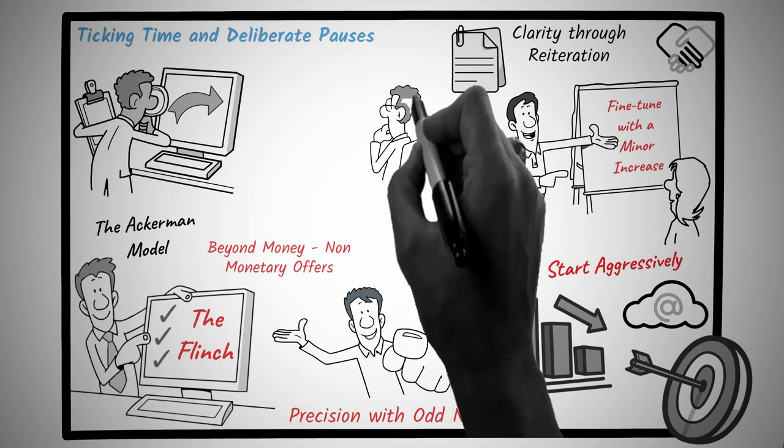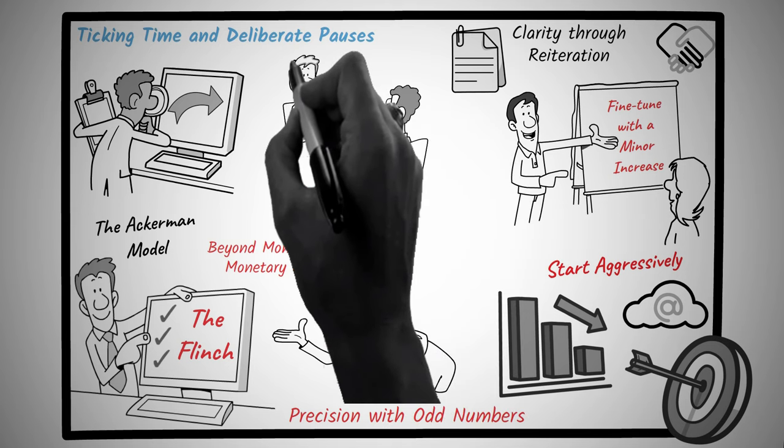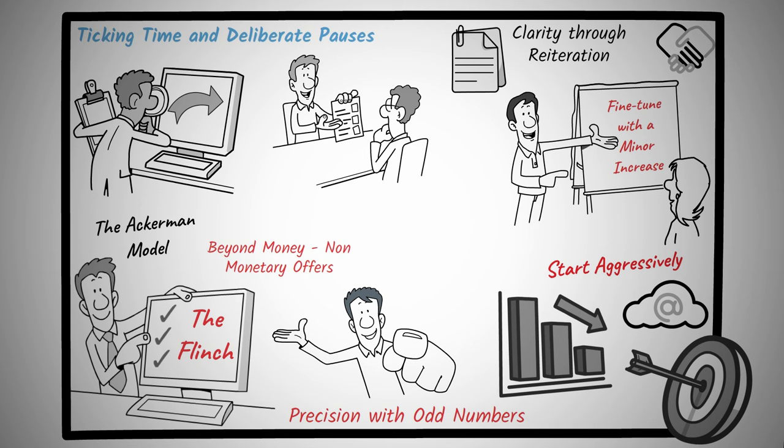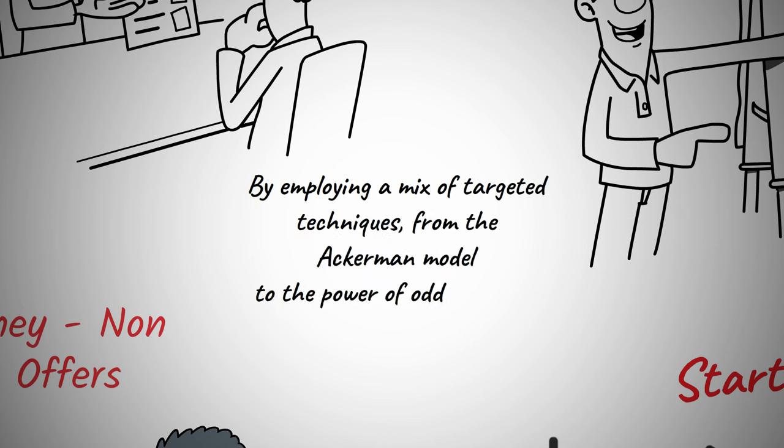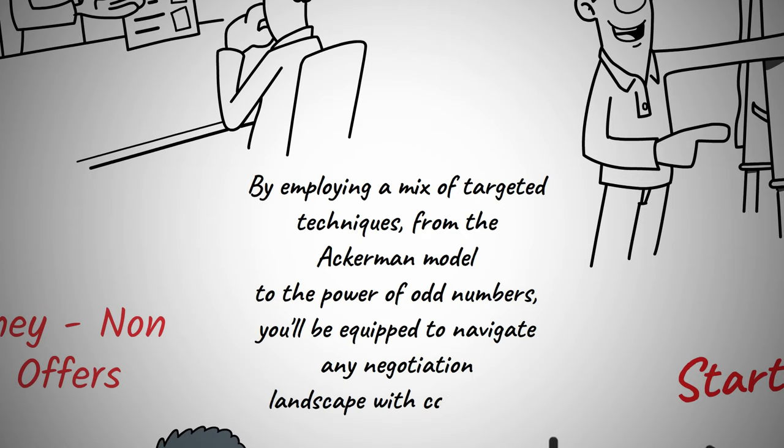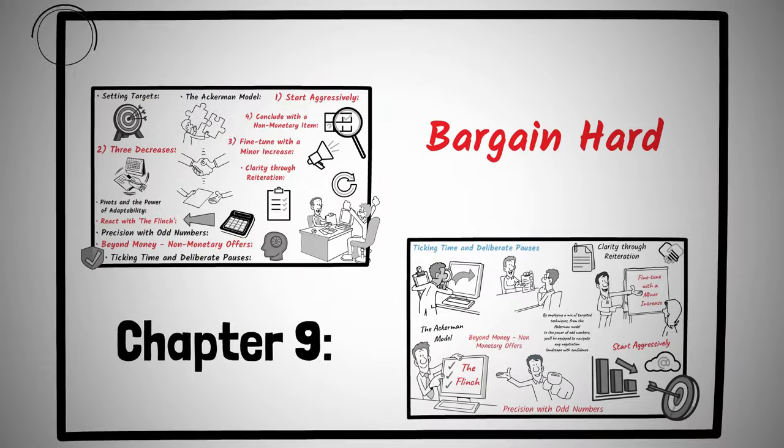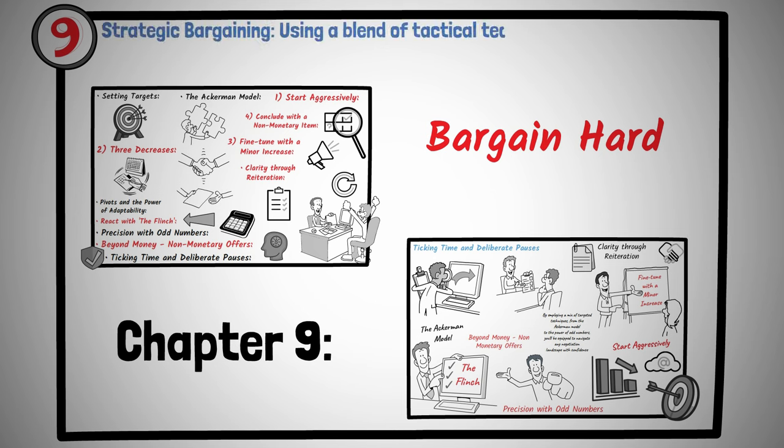Bargaining isn't about being the loudest or the most stubborn. It's about being strategic, adaptive, and understanding the multifaceted nature of value. By employing a mix of targeted techniques, from the Ackerman model to the power of odd numbers, you'll be equipped to navigate any negotiation landscape with confidence. Principle number nine is strategic bargaining. Using a blend of tactical techniques to ensure you always secure the best possible deal.